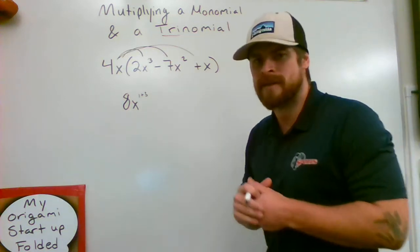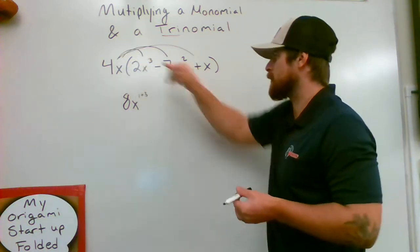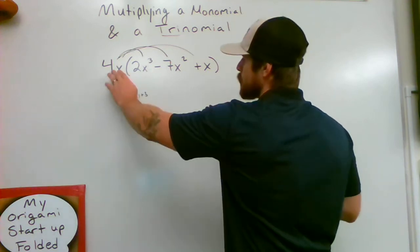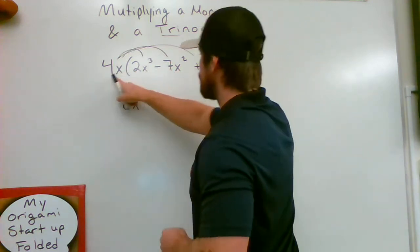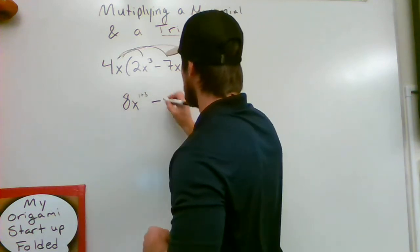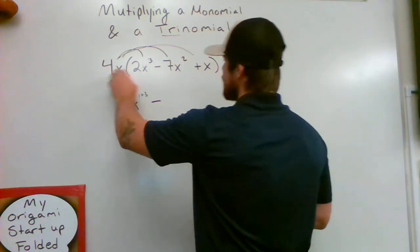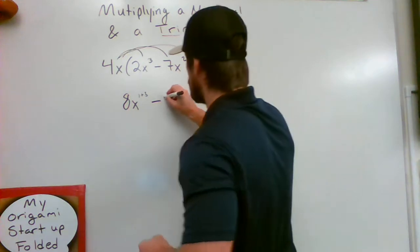Okay, when you multiply bases that are the same, add the exponents. We're going to use that same product rule because we're multiplying this and this term together. A positive times a negative is going to give me a negative result. 4 times 7 is going to give me 28.